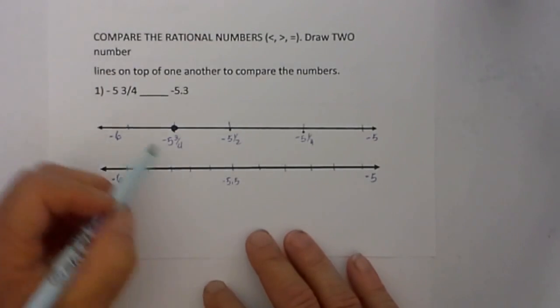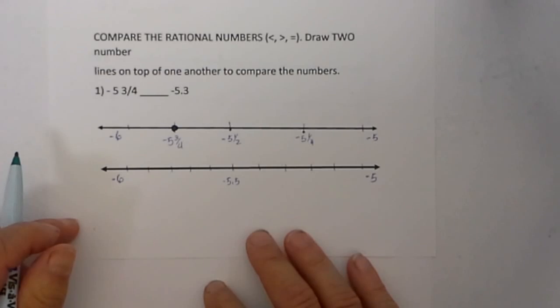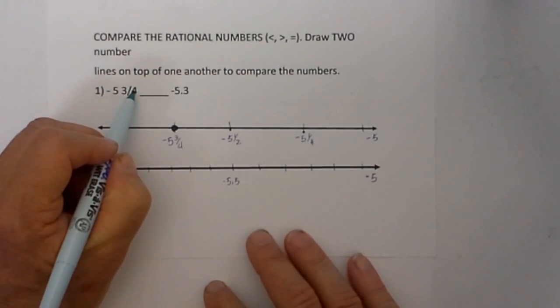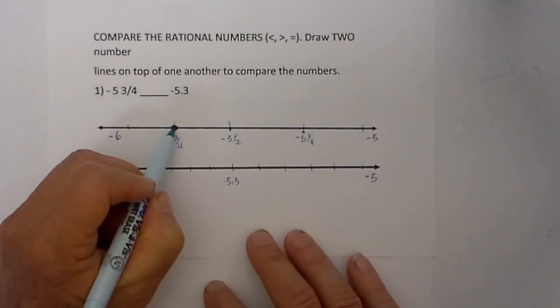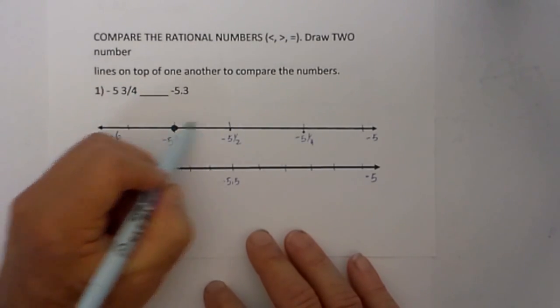Now below that, since it was in thirds, I divide it into equal sections. I use the bottom denominator to tell me how many places to divide this interval. So since it was 4 on the bottom, I divide it into 4.